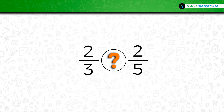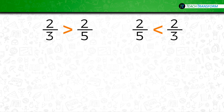Now, which is greater — two-fifths or two-thirds? How could you know that two-thirds is greater than two-fifths just by looking at the denominators? Pause the video and discuss this with your team: why is two-thirds larger than two-fifths, and how can you know just by looking at the denominators? Then do part three.